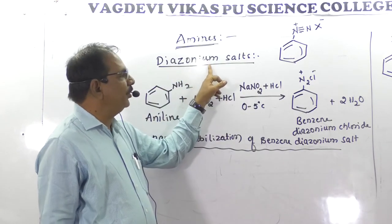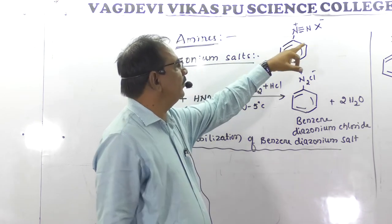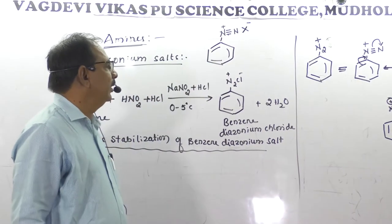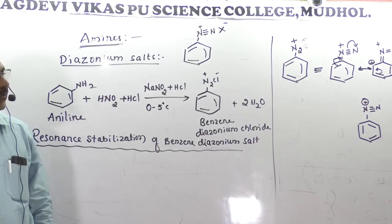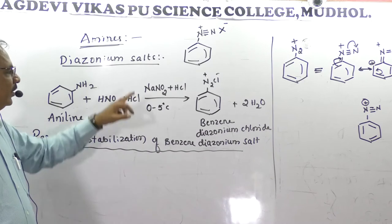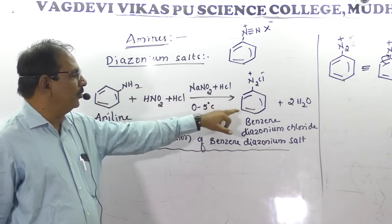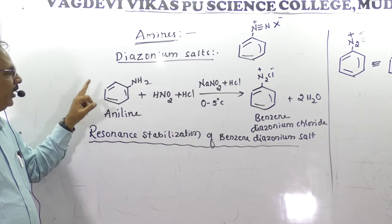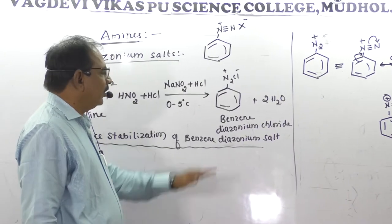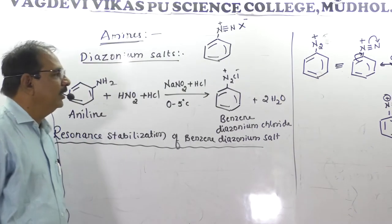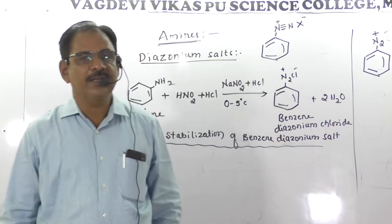These benzene diazonium salts are used to prepare many organic compounds. They undergo two types of chemical reactions: the first type is retention of the diazo group, and the second type is removal or displacement of the diazo group. First, we will discuss the removal of the diazo group by electron-rich species, covering four to five reactions.